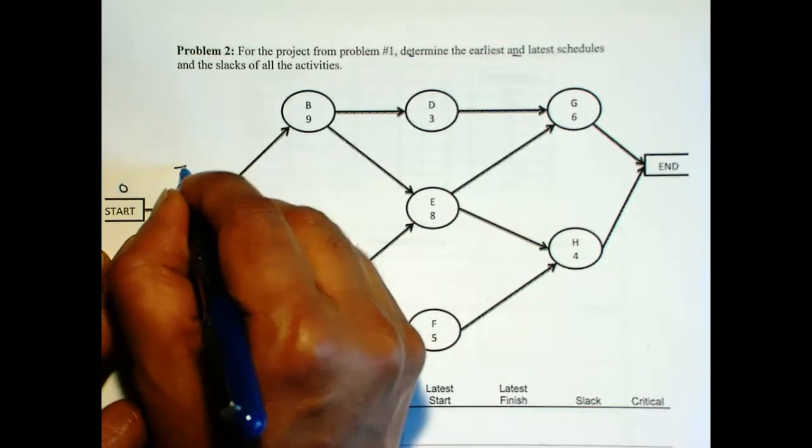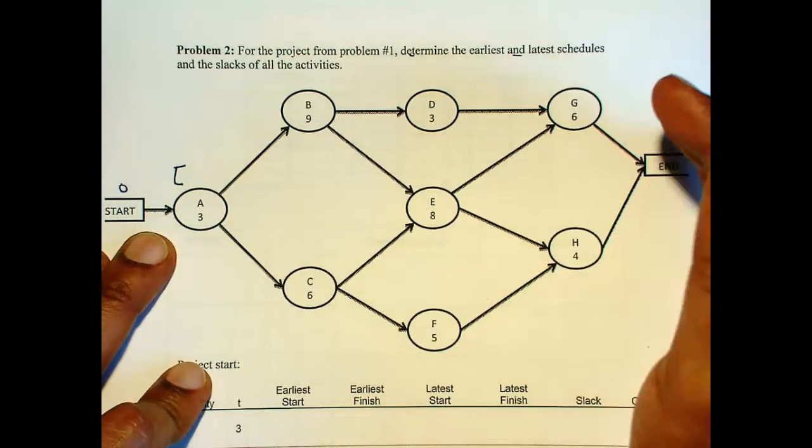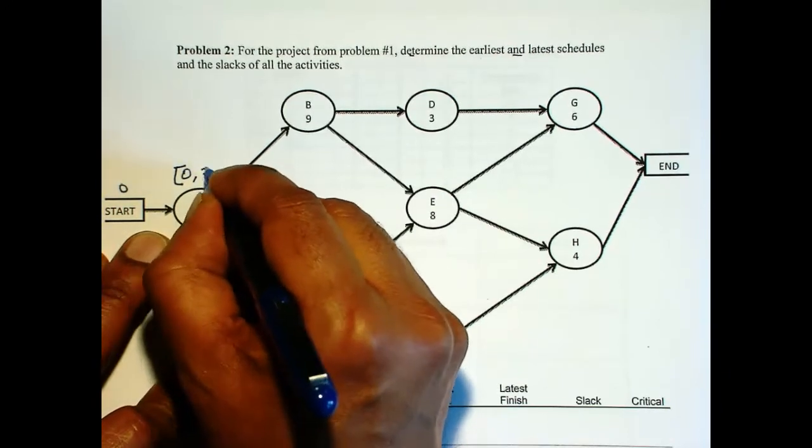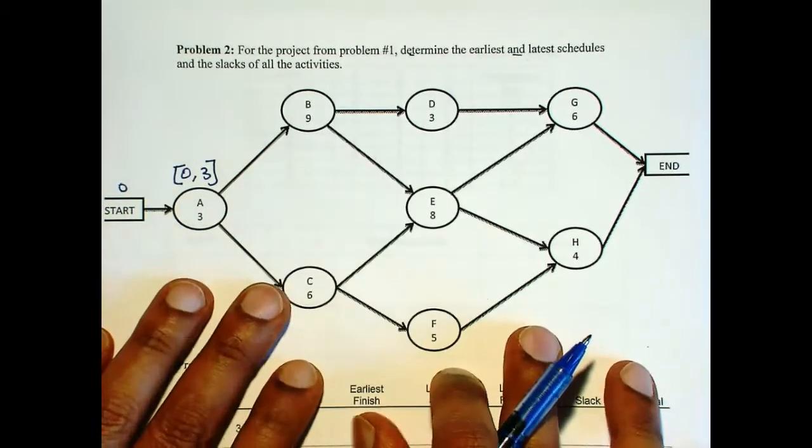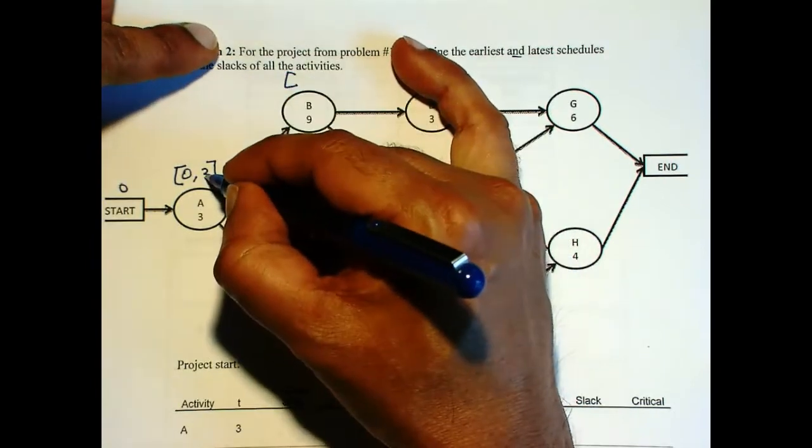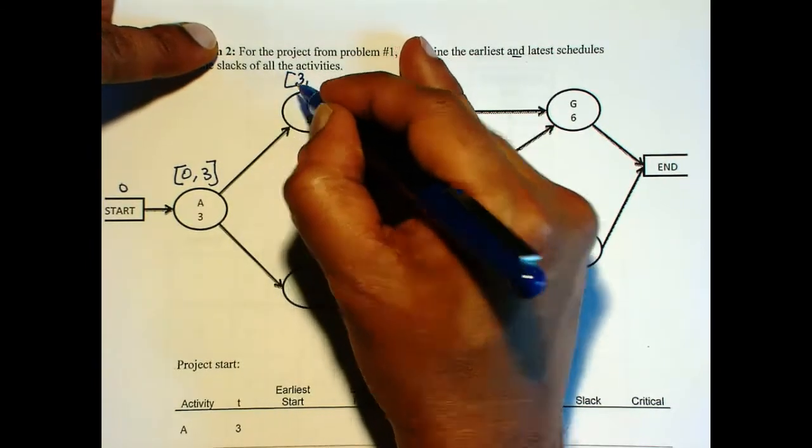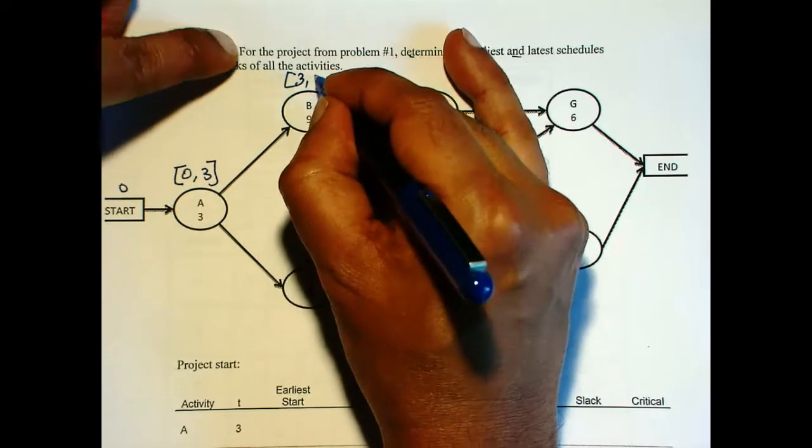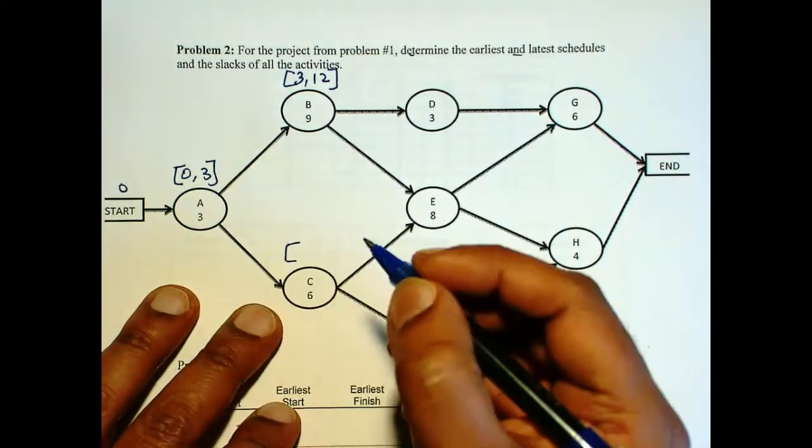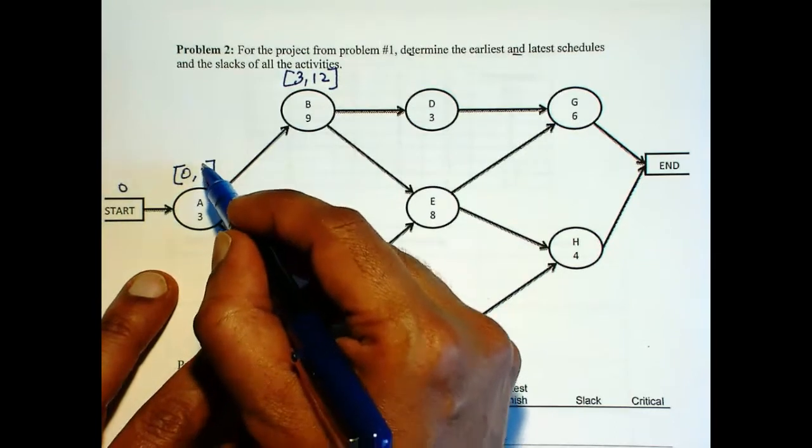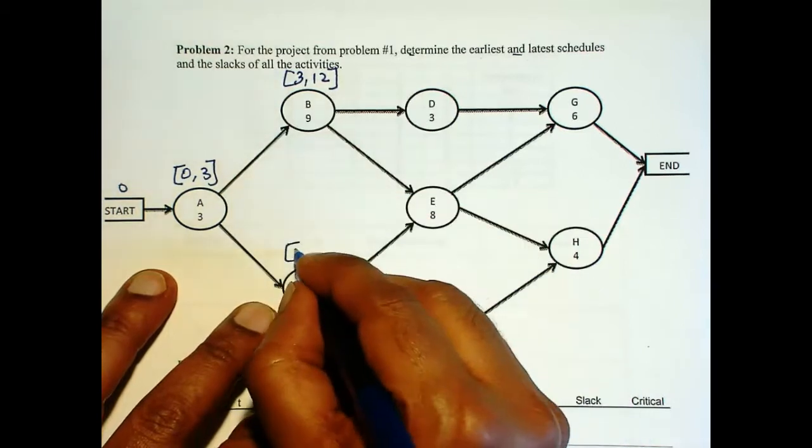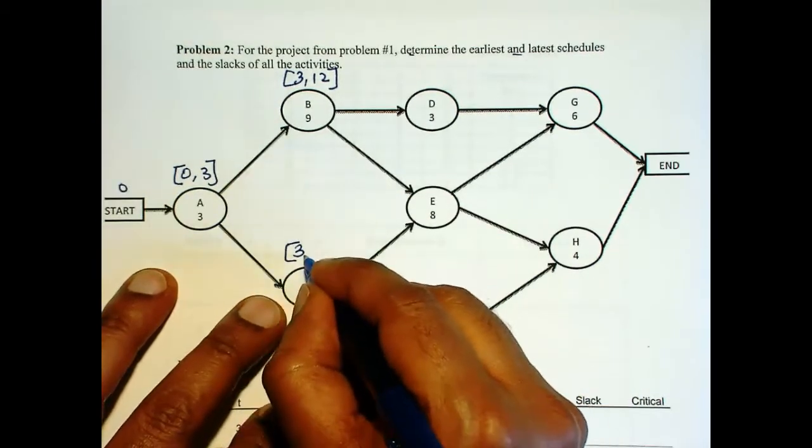So we start with 0. We're going to do the forward pass, which will give us the earliest times. So 0 plus 3 is 3. Then here, 3 is the start time, plus 9 is 12. And here, again, 3, the earliest finish time, and that's the start time. Only one arrow coming in, note that.